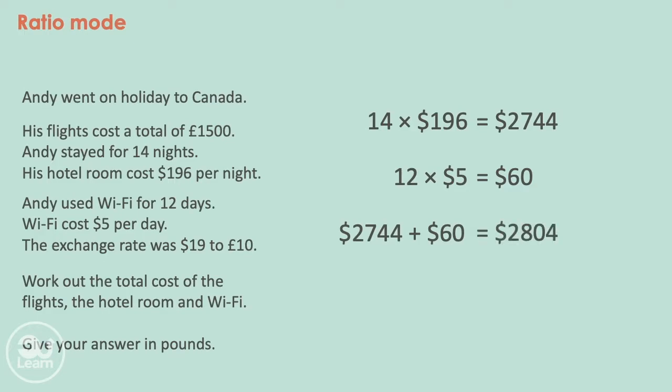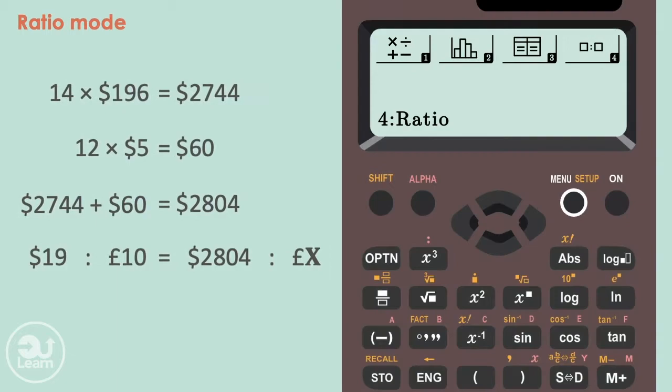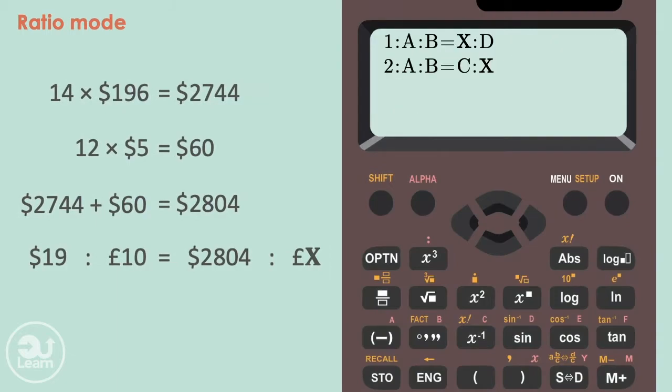The next thing we need to do is have this value converted into pounds. Let's place our information into ratios. These ratios are equivalent to each other. So $19 to £10, which equals to $2,804 to our unknown value in pounds. The right value is missing. So we press menu, 4 and then 2 where the missing X is. Now we put our values in. 19 equals, 10 equals, 2,804 equals. And finally, we press equals again.